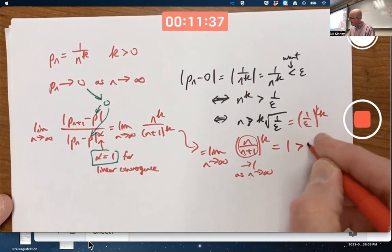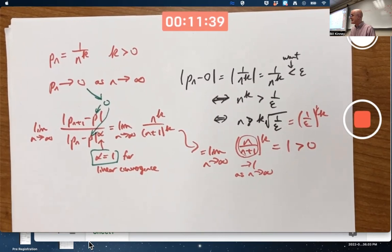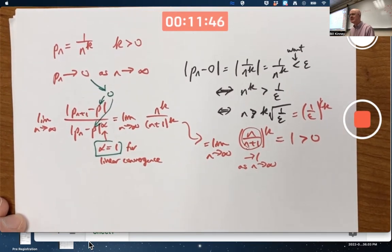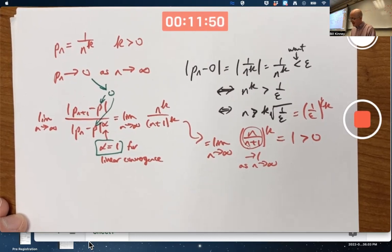This is converging linearly to 0. Again, this is a positive number, not infinity. This is enough to confirm linear convergence. Does it converge? Could it also converge quadratically? Is it possible to converge both linearly and quadratically? The answer is no.